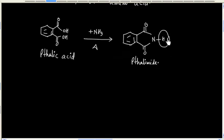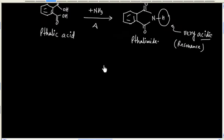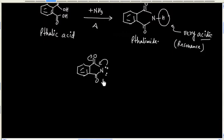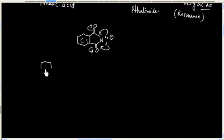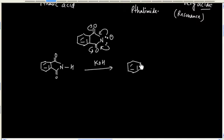In thalamide, the hydrogen is very acidic in nature, and this is because of resonance. The corresponding conjugate base is resonance stabilized — we have two-sided resonance, so it is resonance stabilized. This means when thalamide is treated with a base, let us say KOH, this forms the potassium salt of thalamide.